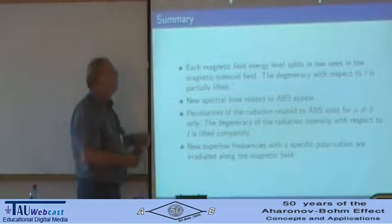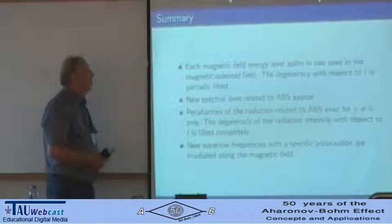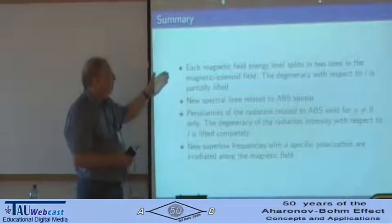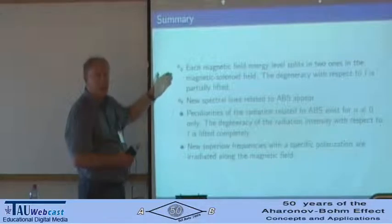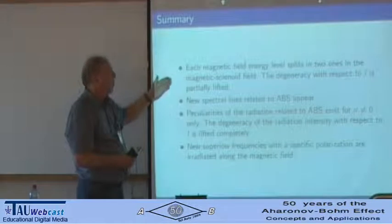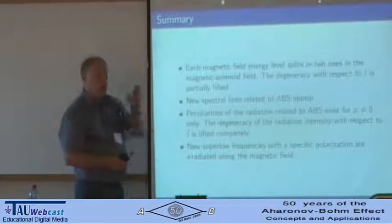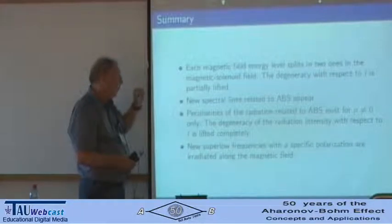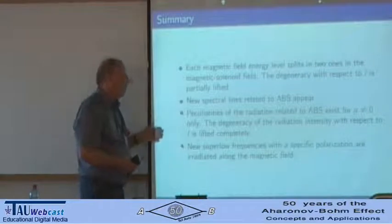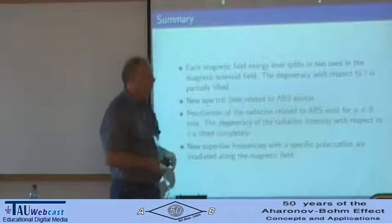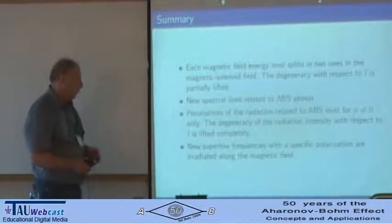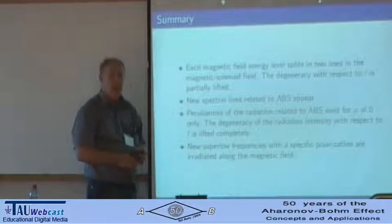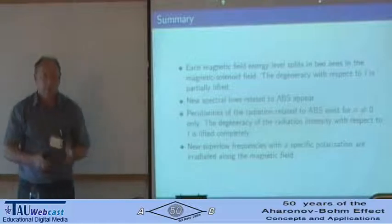Here one can see the summary of results. The presence of the solenoid splits energy levels in the magnetic field and lifts the degeneracy with respect to L in radiation. This splitting provides new spectral lines. All the peculiarities of the radiation related to the Aharonov-Bohm solenoid exist only for non-zero mantissa. New super-low frequencies with specific polarization are irradiated along the magnetic field. That's all.